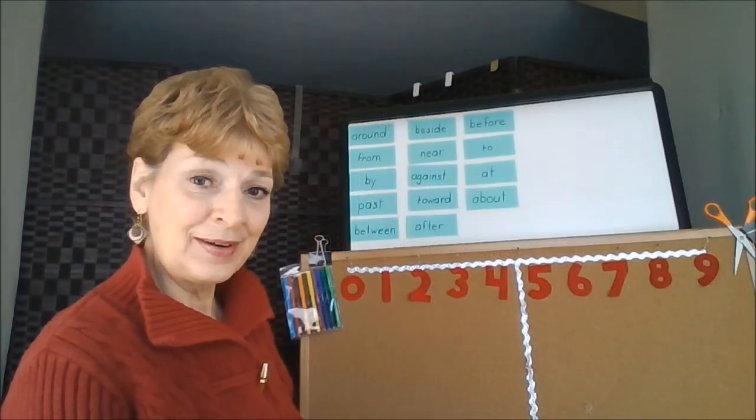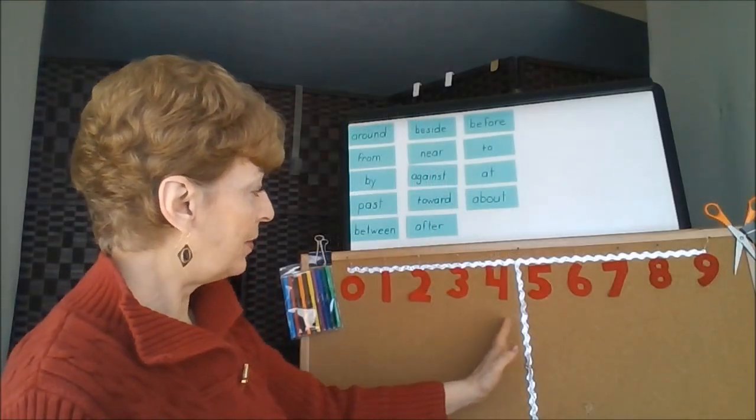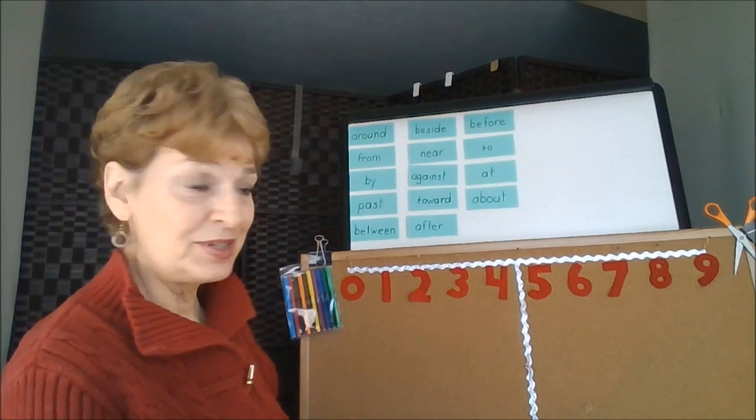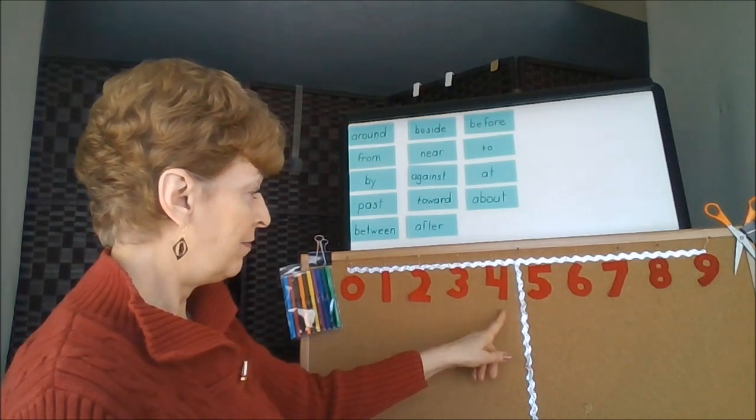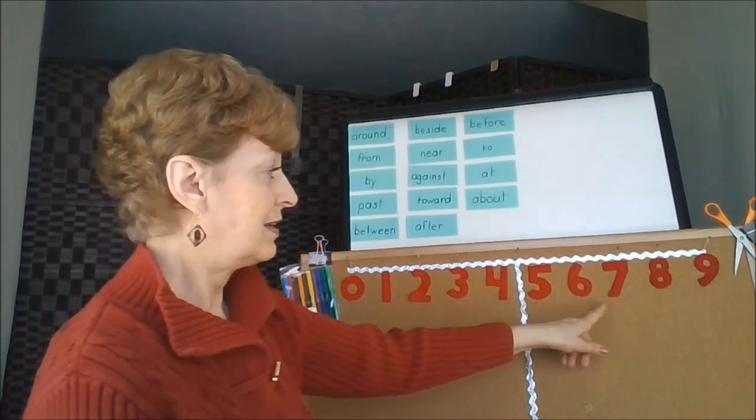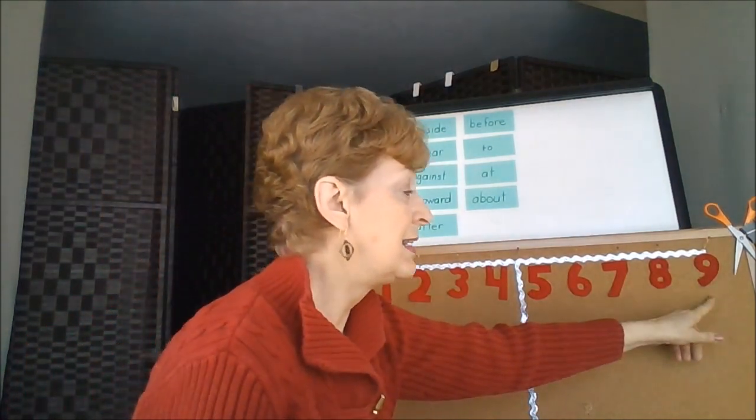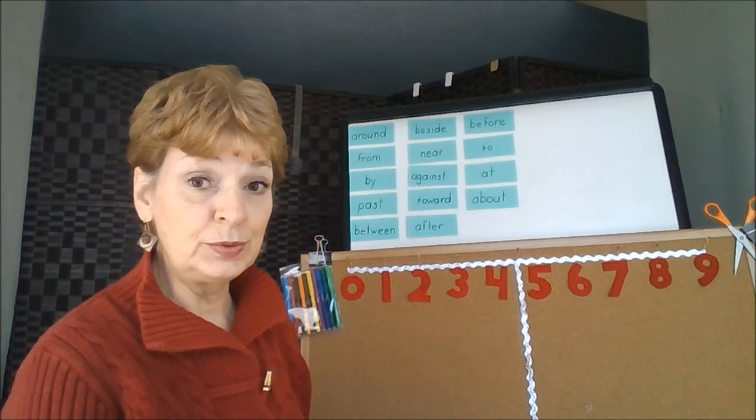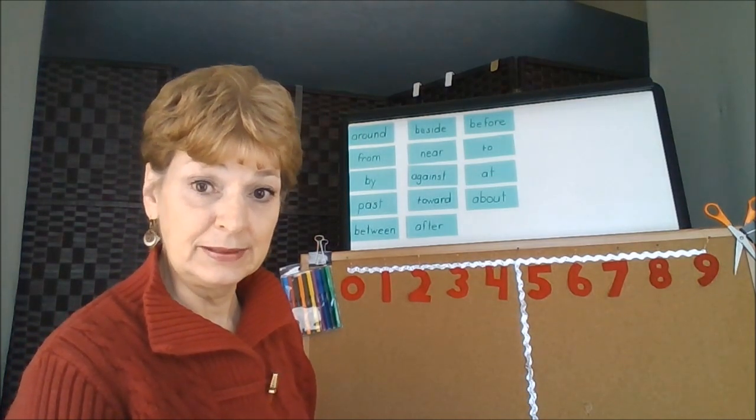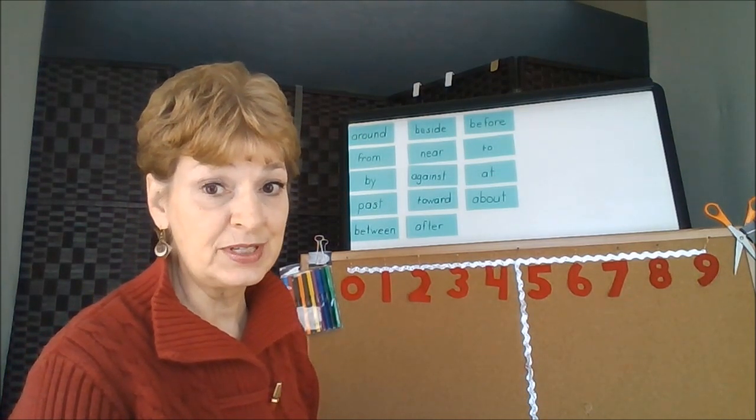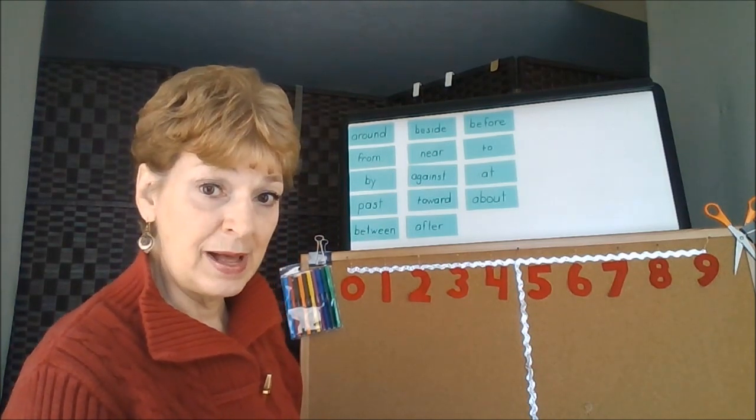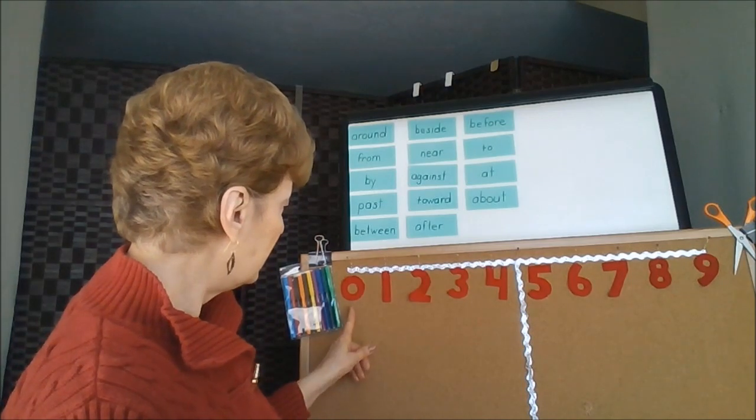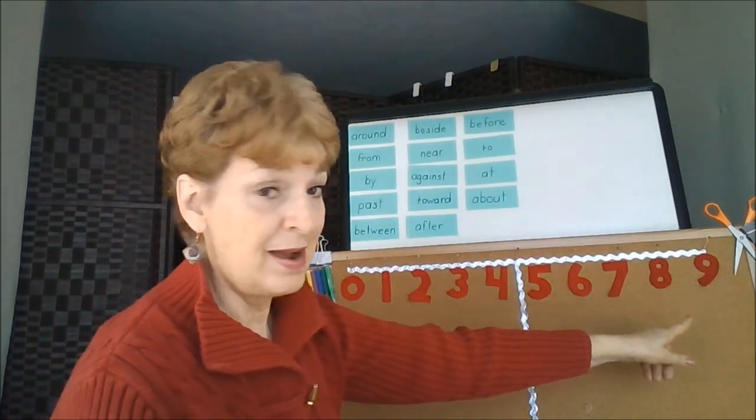This time, I've marked the number line with the single digit numbers. That would be 0, 1, 2, 3, 4, 5, 6, 7, 8, 9. I didn't do 10 because 10 is a double digit. It has two numbers to make that number, a 1 and a 0. I'm talking only about the single digit numbers, the 0 through 9.